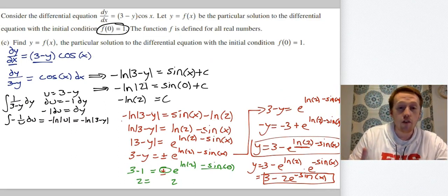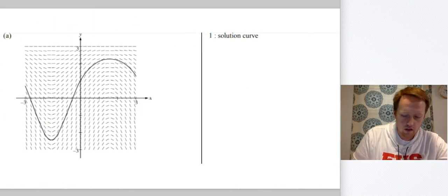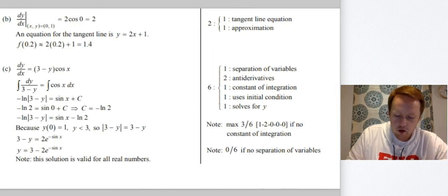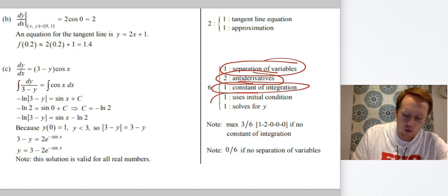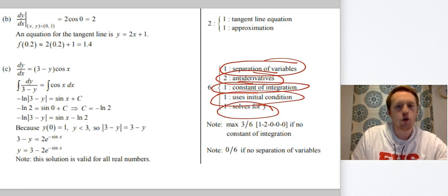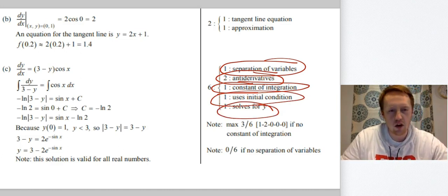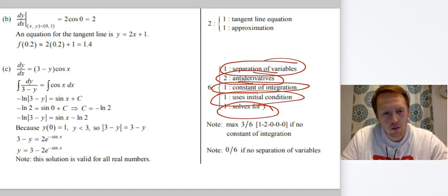All right. So solving for y was a ridiculous amount of work. But if we look at the scoring guidelines, which there's your solution curve, you get one point for separating the variables. You get one point for each of the anti-derivatives, one point for getting the constant of integration, one point for using the initial condition to get the constant of integration. And that last point is solving for y. So if you're terrified of the algebra, just be careful in the calculus part, and you can still get most of the points.